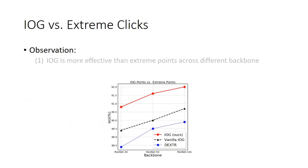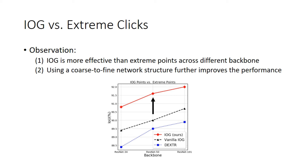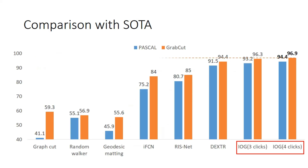In our experiments, we first show that our IOG outperforms extreme points across different backbones, and the performance is further boosted when using a coarse-to-fine structure. When comparing with the state of the art, we can see that using only three clicks, our IOG already outperforms all existing methods. Adding the first additional click further improves its performance.